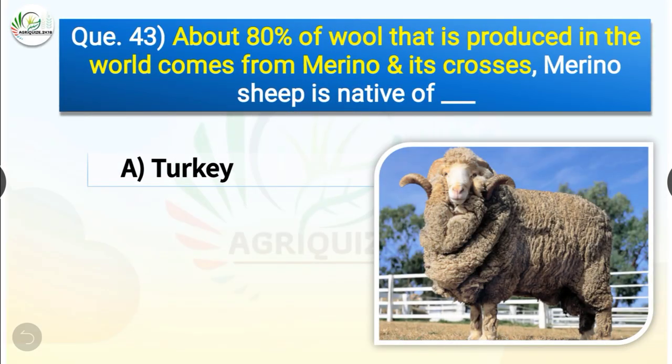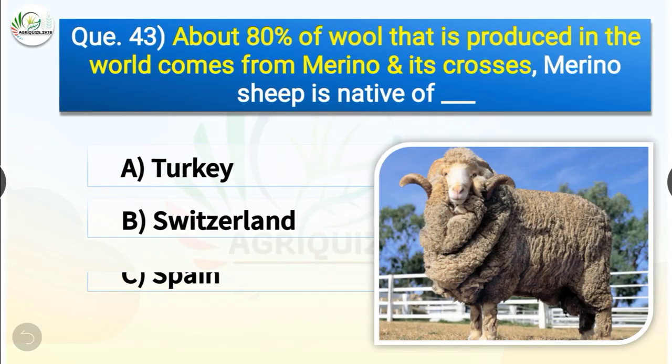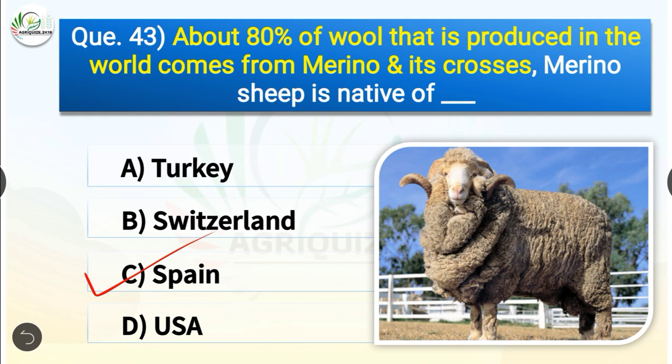Question number 43. About 80% of wool produced in the world comes from Merino and its crosses. Merino sheep is native of dash. The options are Turkey, Switzerland, Spain or USA. The correct answer is option C, Spain. So about 80% of world wool comes from Merino and its crosses, and Merino sheep is native of Spain.